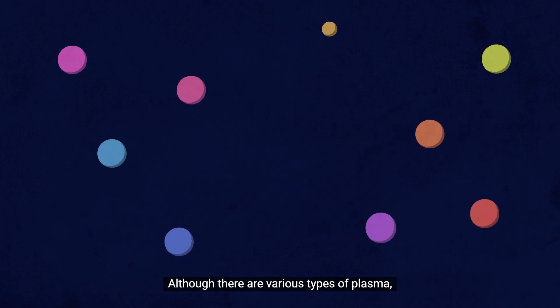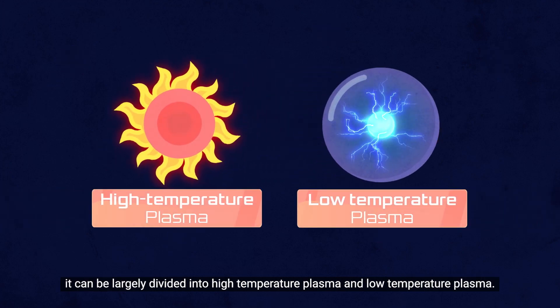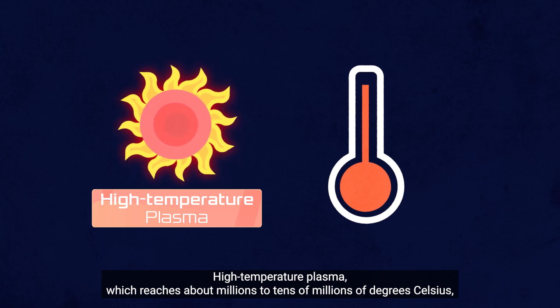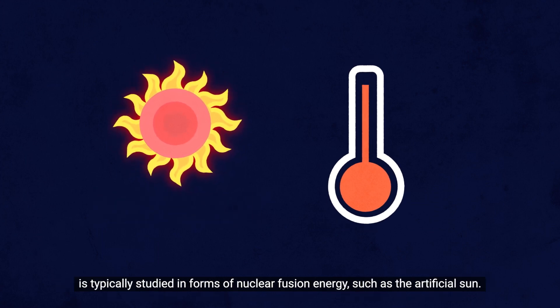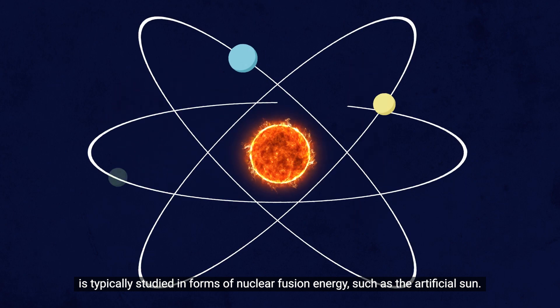Although there are various types of plasma, it can be largely divided into high-temperature plasma and low-temperature plasma. High-temperature plasma, which reaches about millions to tens of millions of degrees Celsius, is typically studied in forms of nuclear fusion energy, such as the artificial sun.